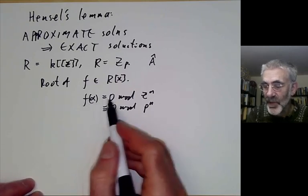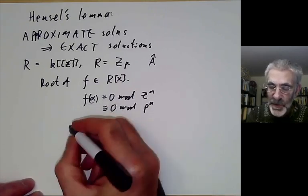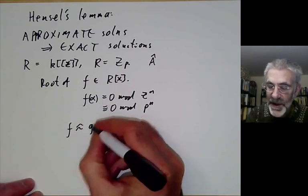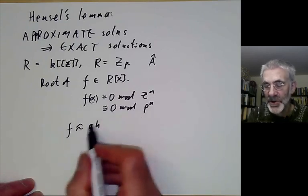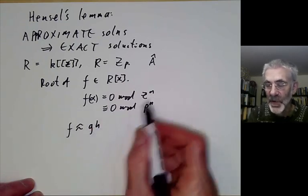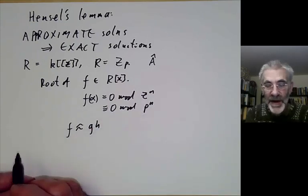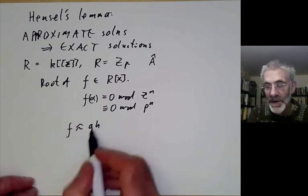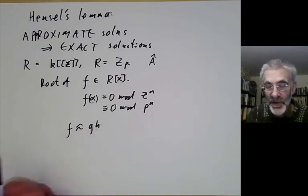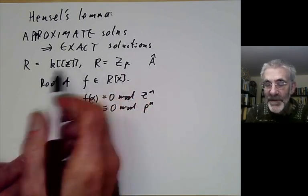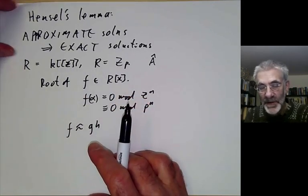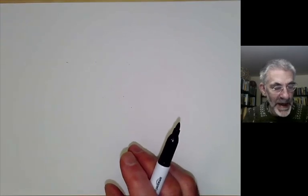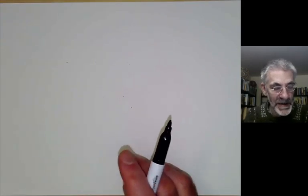For instance, instead of finding approximate roots we could find an approximate factorization of f into polynomials g and h modulo some power of z or p to the n. Finding a root would be the special case when one of these polynomials has degree one, and there are various different rings we can use. I'm going to give one of the simplest cases of Hensel's Lemma.